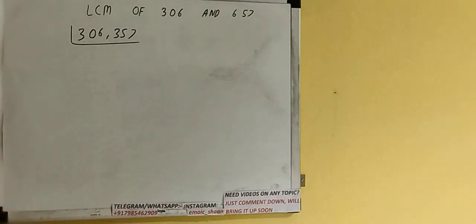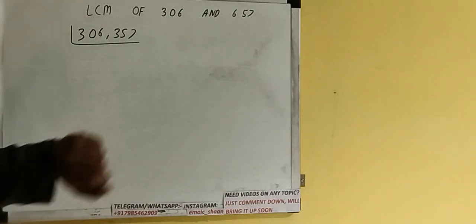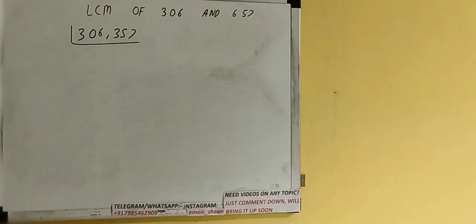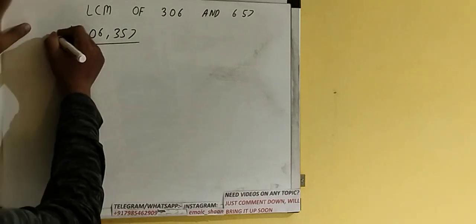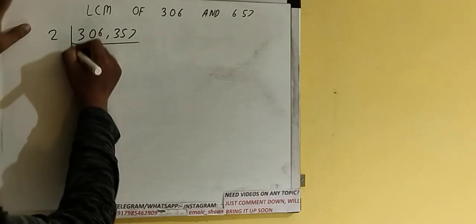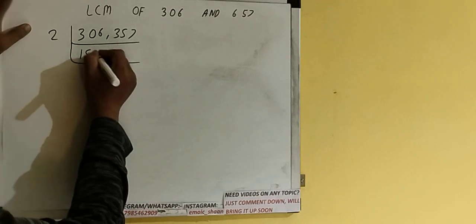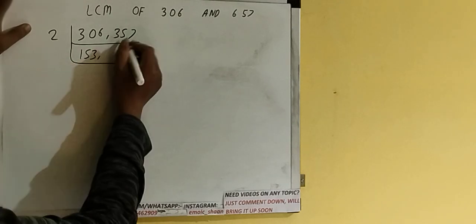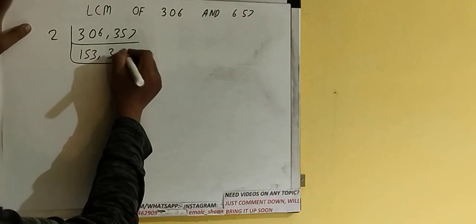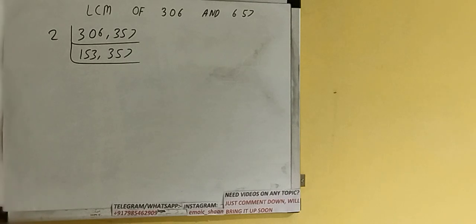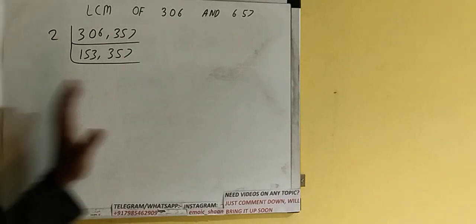The next thing we need to do is start with the lowest prime number, 2, and check if any of the numbers are divisible or not. The first number is divisible by 2 but not the second one, so we divide the first number by 2 and it becomes 153. The second number, 657, is not divisible by 2, so we just copy it down.